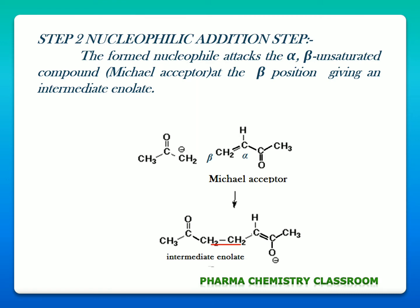When this carbanion comes and attacks this beta carbon, there is a shift in pi electrons. Our final resultant product of this step is an intermediate enolate which has a negative charge on the oxygen. This new C-C bond formed is a bond between the carbanion carbon and this beta carbon.